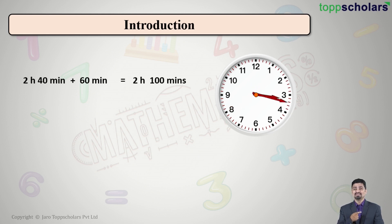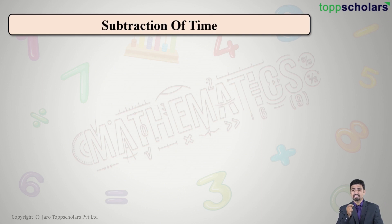So although my addition gave me 2 hour 100 minutes, what is the time in the watch? The time in the watch is 3 hour 40 minutes, correct? So my 2 hour 100 minutes is same as 3 hour 40 minutes. The time in the watch shown is 3 o'clock and 40 minutes. Next type, that is subtraction of time.